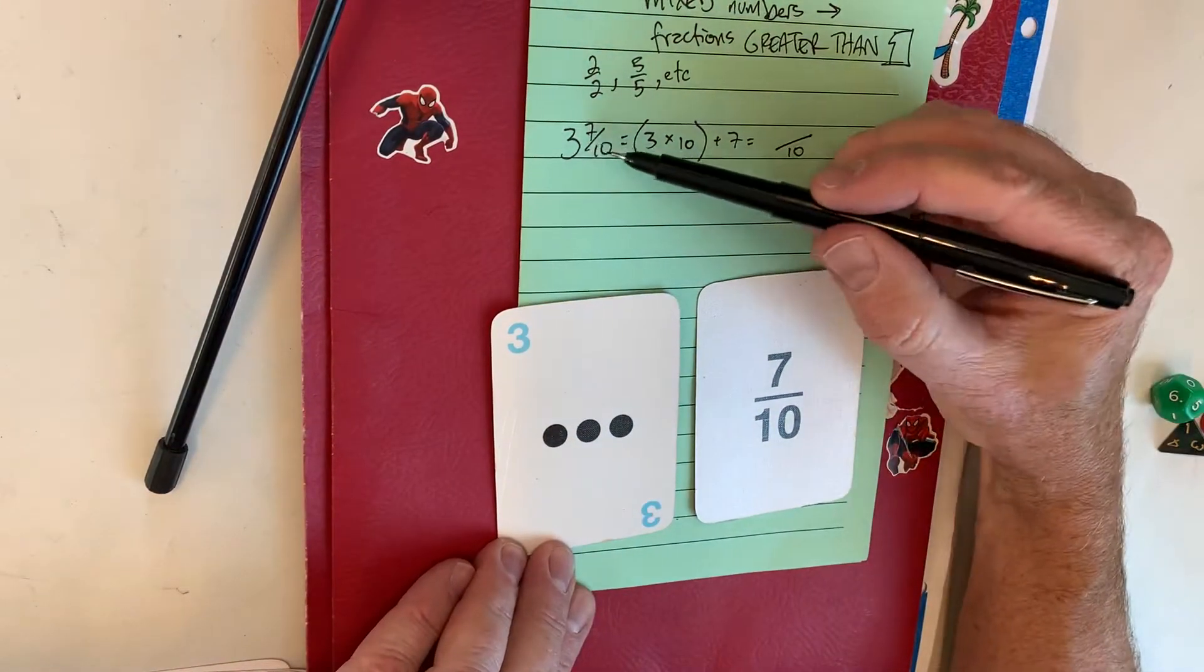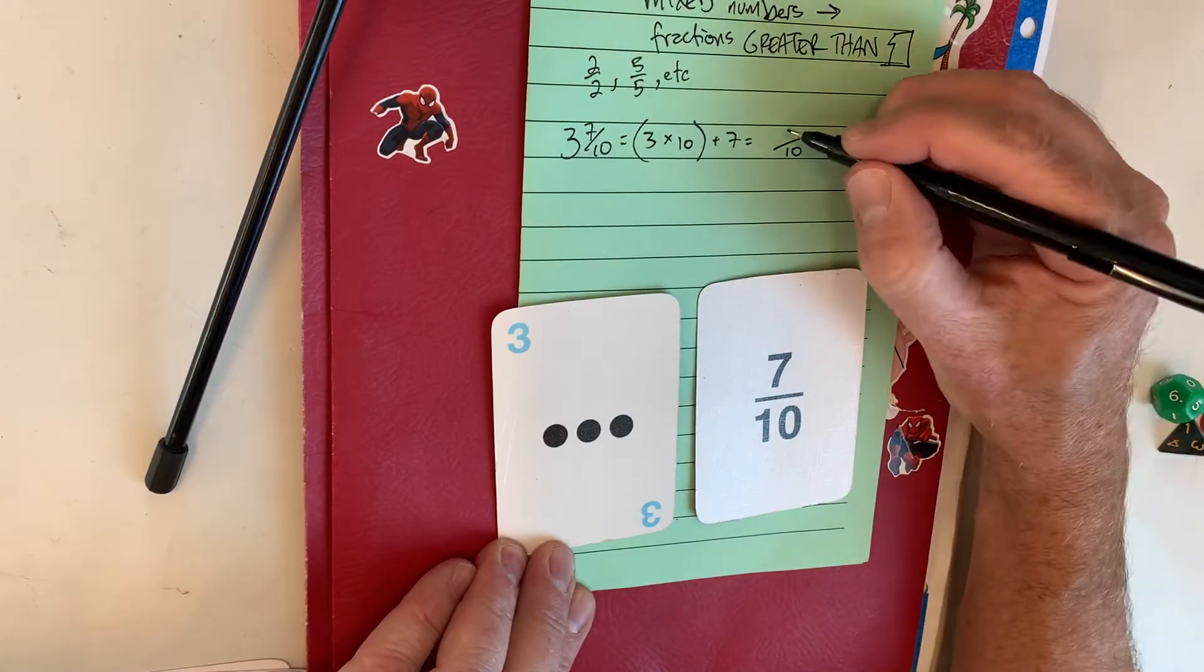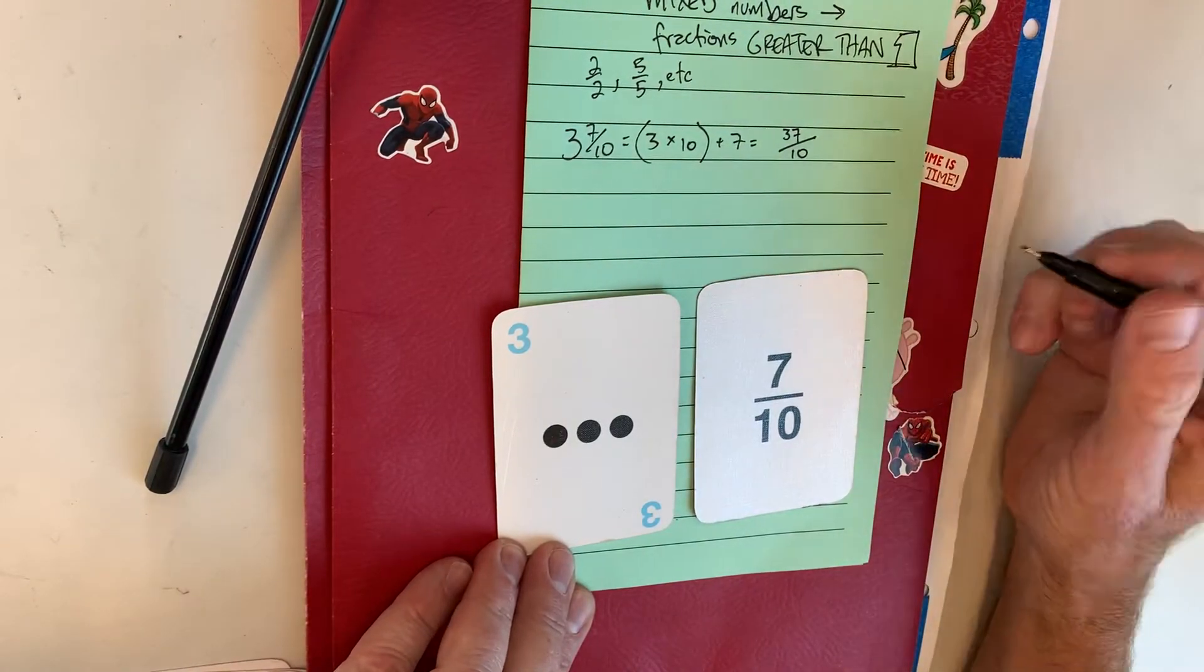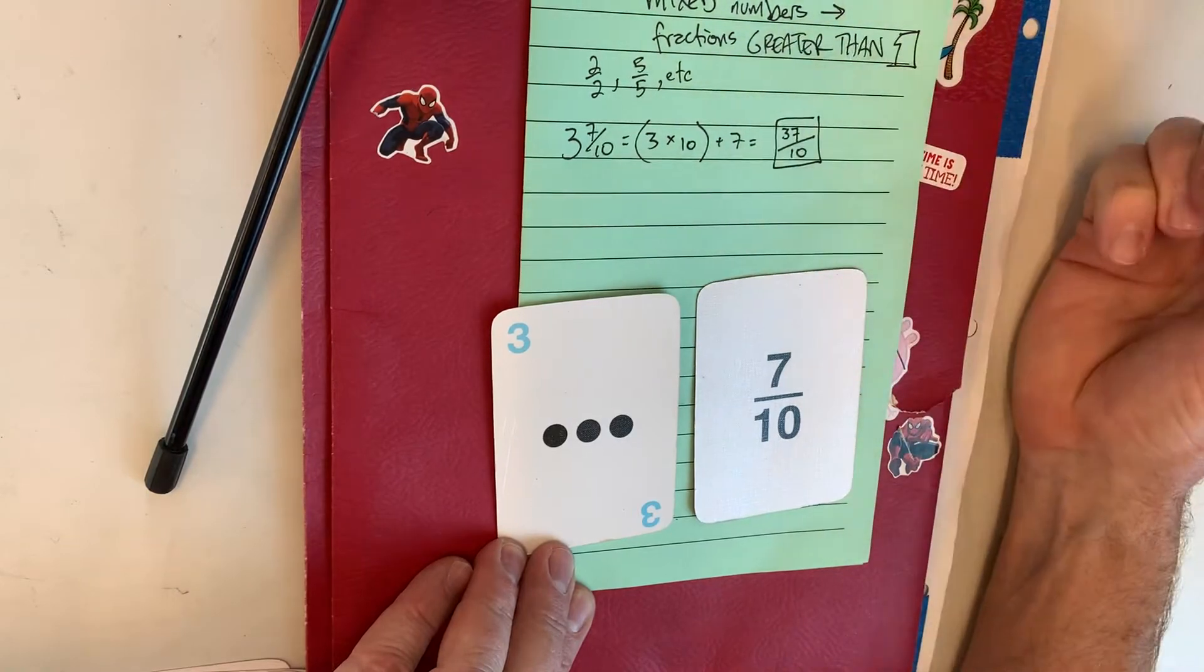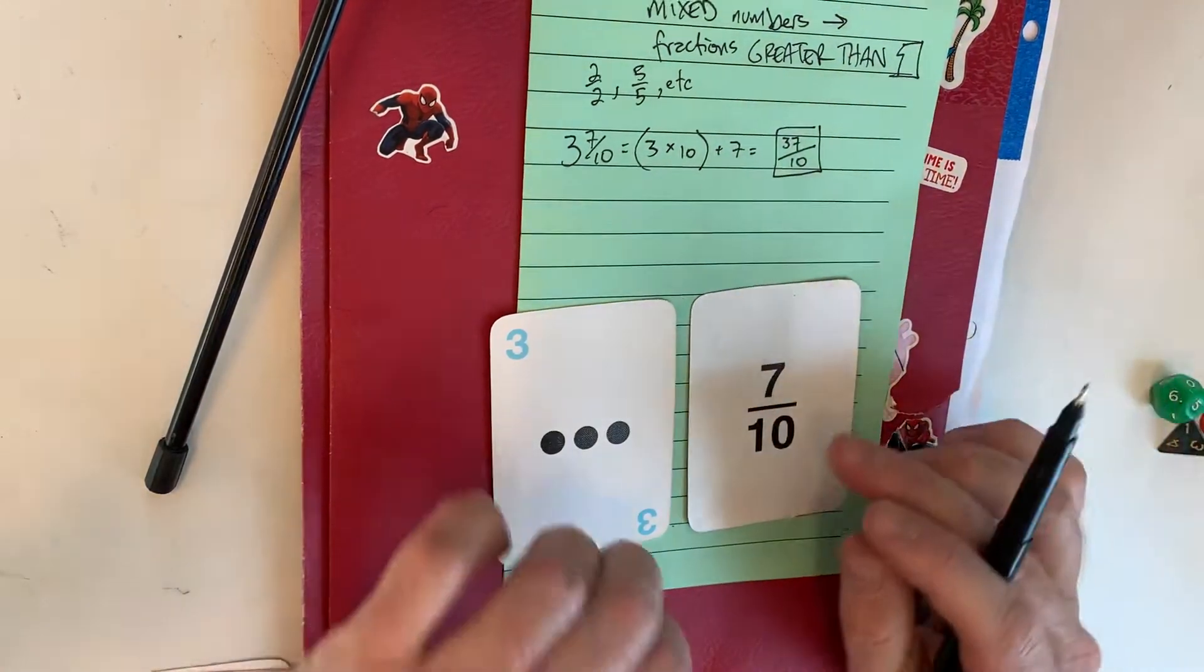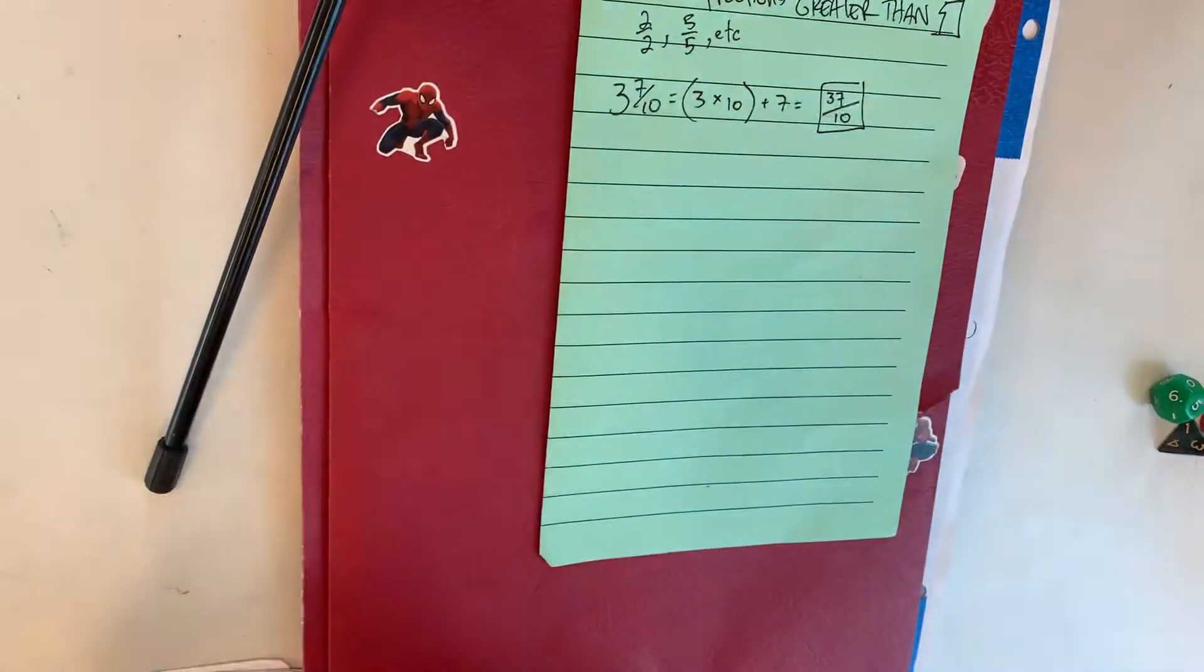So three times ten gives me thirty, and thirty plus seven is thirty-seven. Thirty-seven tenths is a fraction greater than one, because one would be ten-tenths. So that's this. Let's do another one.